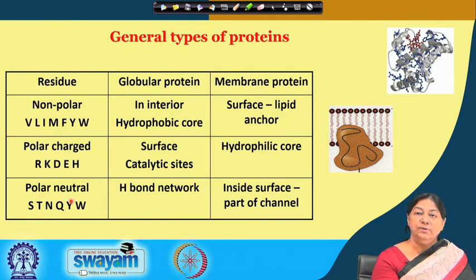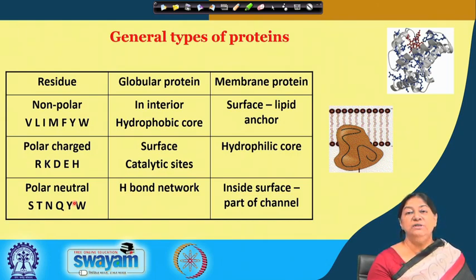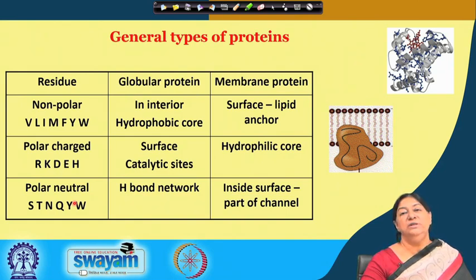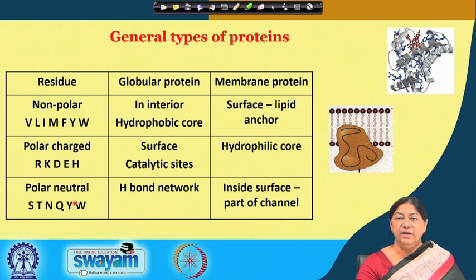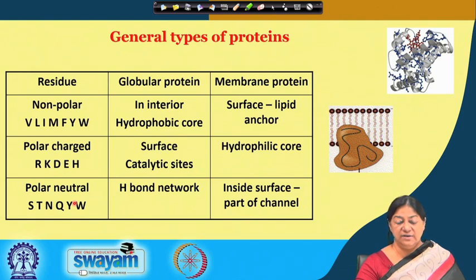In a transmembrane protein with a hydrophilic core, this allows the transport of ions from inside to outside of the cell, or vice versa. Polar neutral amino acid residues are mostly involved in hydrogen bonding — in membrane proteins they form part of the channel, and in globular proteins they are involved in the extensive hydrogen bonding network that holds the protein structure together. The covalent bonds in proteins are the peptide bonds, along with disulfide linkages between two cysteine residues.